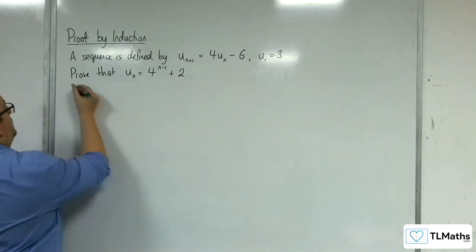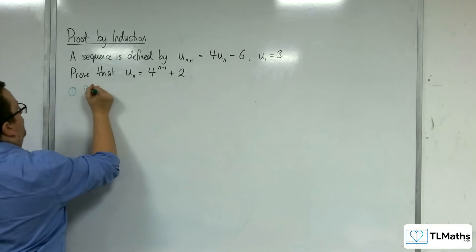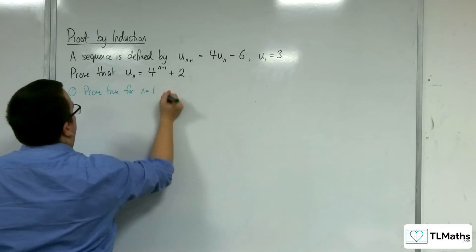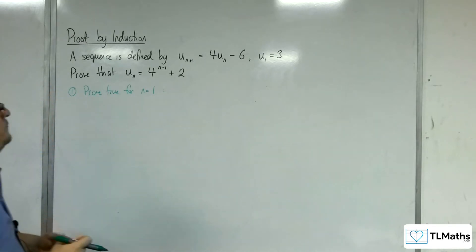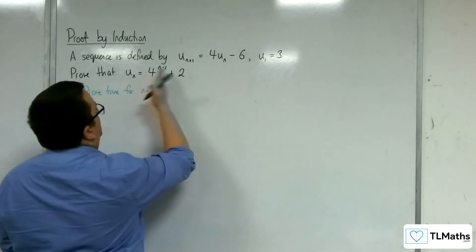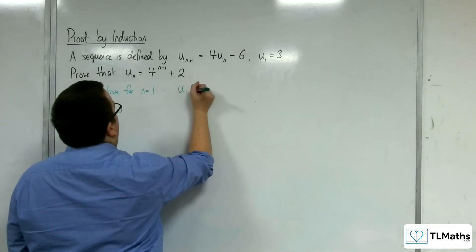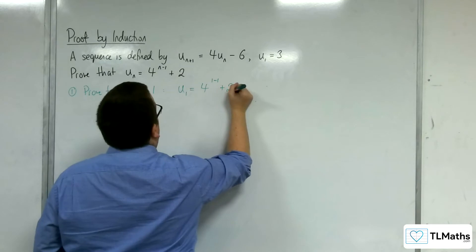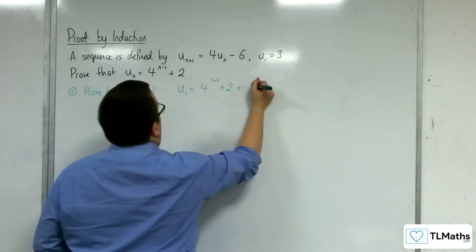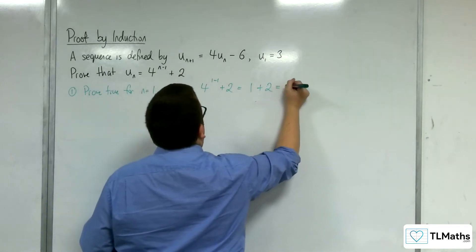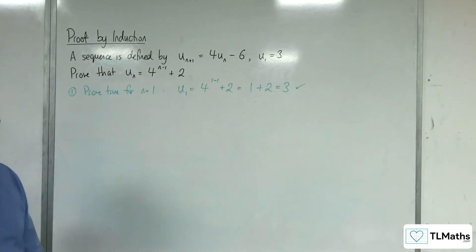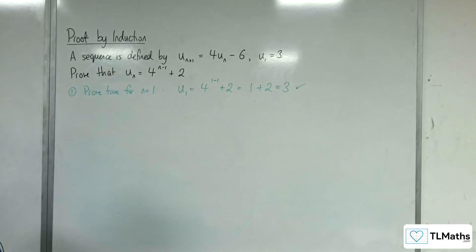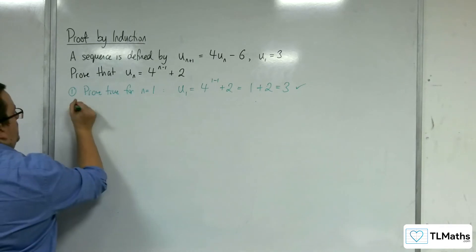Stage 1: prove true for n = 1. If we substitute in n = 1, we get u(1) = 4^(1-1) + 2, which is equal to 1 + 2, which is 3. That works out — u(1) is indeed 3.